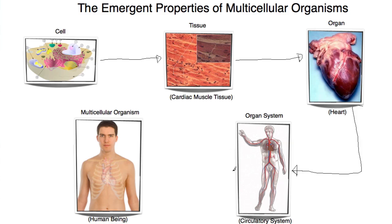And finally, many organ systems working together form a multicellular organism. The important thing to remember is that the cells by themselves are not very useful. It is the cells working together as a unit to form the tissues, and the tissues working together as a unit to form an organ, that makes this organ able to function properly. And so the whole is better than the composition of its parts.